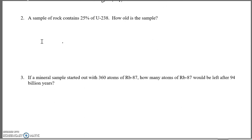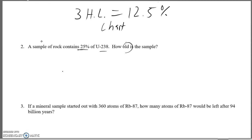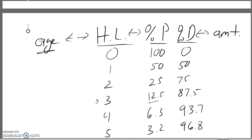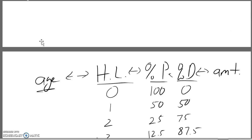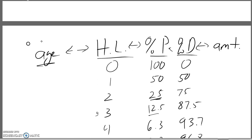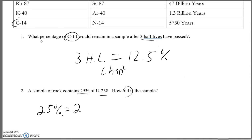Problem two: a sample of rock contains 25% of uranium-238 — how old is the sample? We're looking for the age, and we're given the percentage of uranium-238 as the parent. If we have 25% of the parent, we look at our chart and we can see that corresponds to two half-lives. So 25% of the parent means the sample has been through two half-lives, which we determined from the chart.